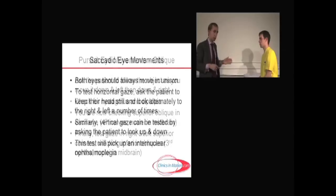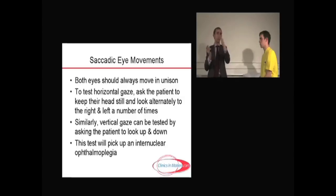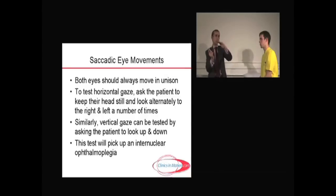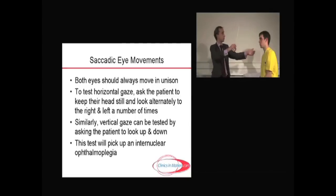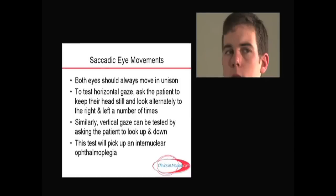Once you've done the pursuit movements, look for saccadic eye movements. Eye movements should be like windscreen wipers — in complete synchronicity. When they fall out of kilter, the eyes start to jump, and that's what you're testing for. Ask the patient, keeping their head still, to look rapidly left, right, left, right repeatedly. You can do the same in vertical gaze — up and down — but horizontal gaze is usually more productive.